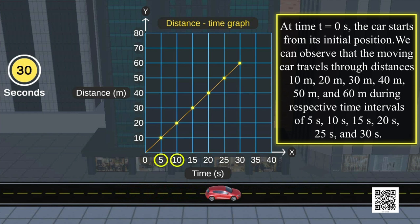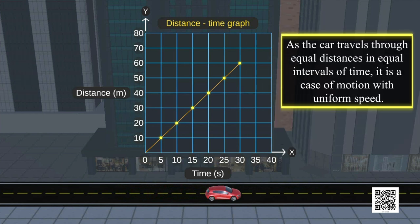10 seconds, 15 seconds, 20 seconds, 25 seconds, and 30 seconds. As the car travels through equal distances in equal intervals of time, it is a case of motion with uniform speed.